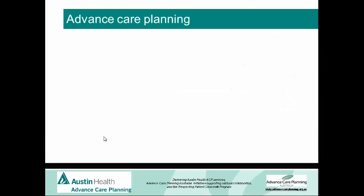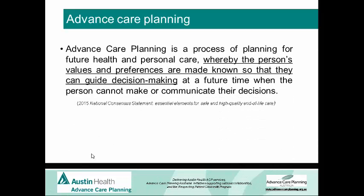Just briefly, so that we're all on the same page — advanced care planning. This is actually the definition that is in the 2015 consensus statement we've just been hearing about. You see a number of definitions around, but they're all basically saying the same thing. It's a process of planning for future health where the person's values and preferences are made known so they can guide decision making at a future time.